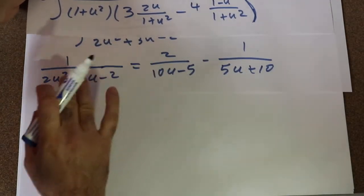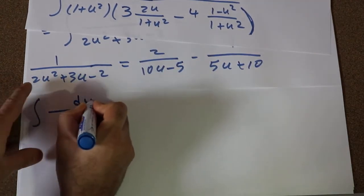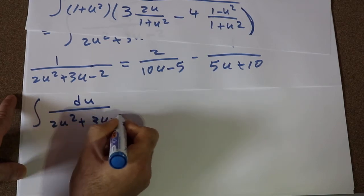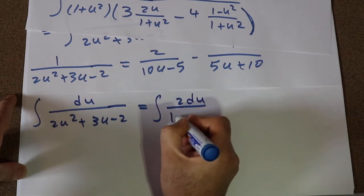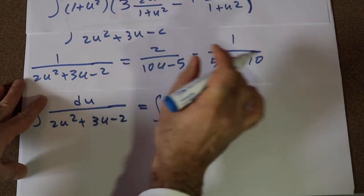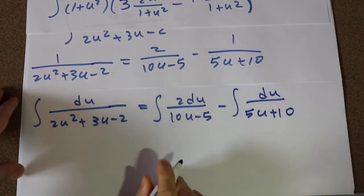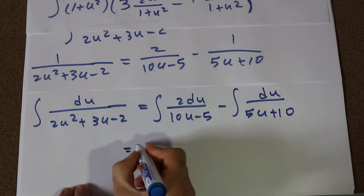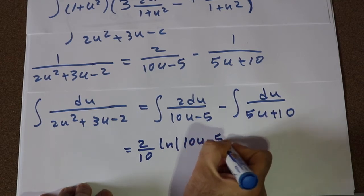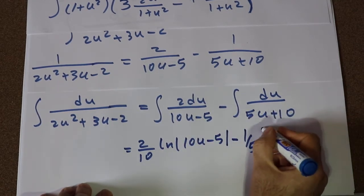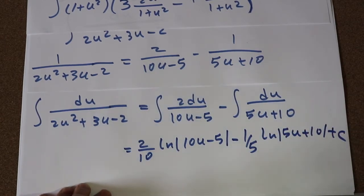So this integral equals the integral of 2du divided by 10u minus 5, minus the integral of du divided by 5u plus 10, which equals 2 divided by 10 times ln|10u minus 5| minus 1 divided by 5 times ln|5u plus 10| plus C, the constant of integration.